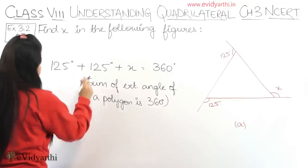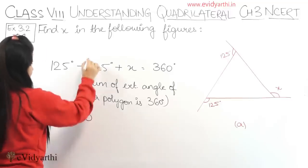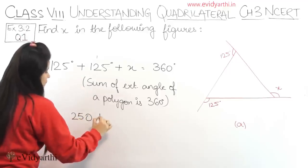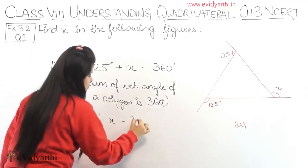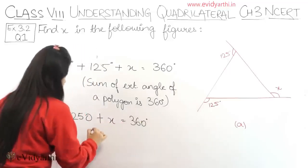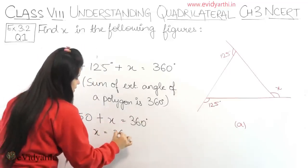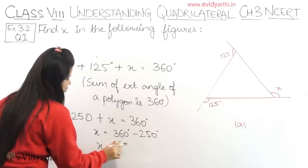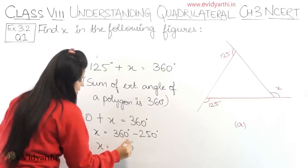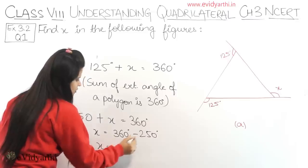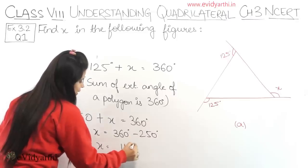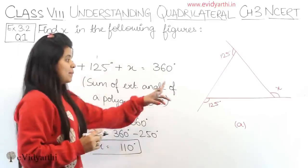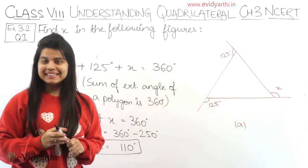Now we have to add this. 5 plus 5 is 10, then 2 plus 2, 4 plus 1 is 5, 1 plus 1 is 2, so 250 plus x equals 360 degrees. To find x, we calculate 360 minus 250 degrees. So x equals 110 degrees. So we have found x, that is 110 degrees. Now this is part number A.